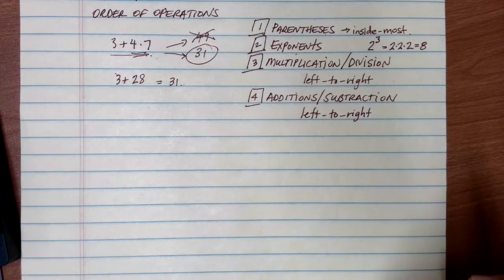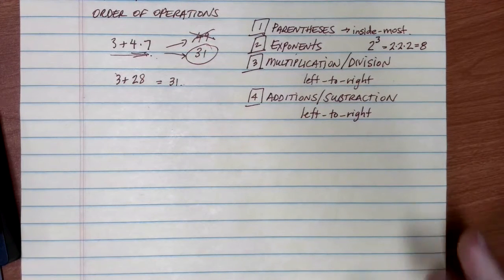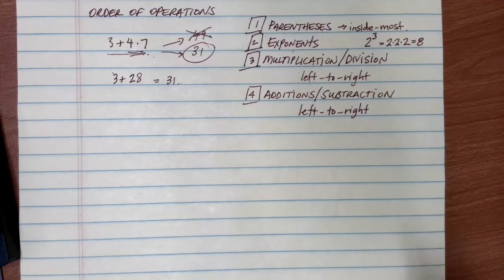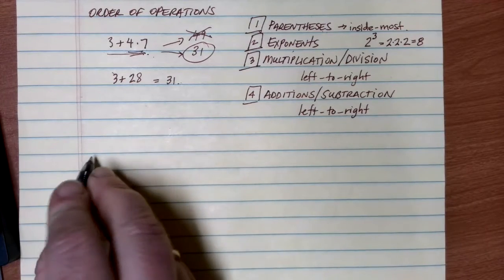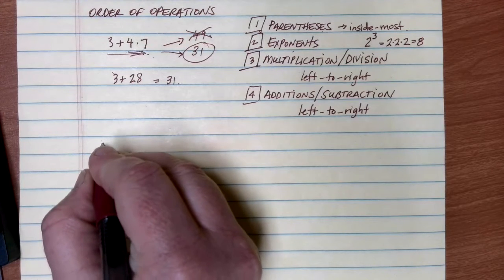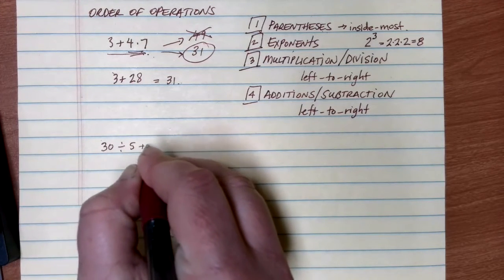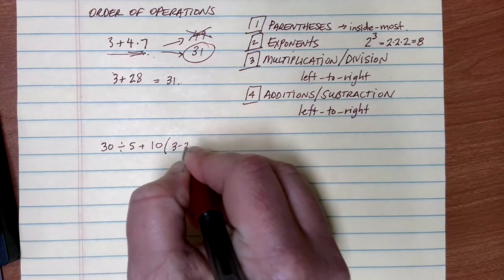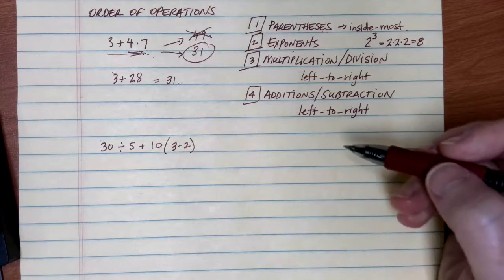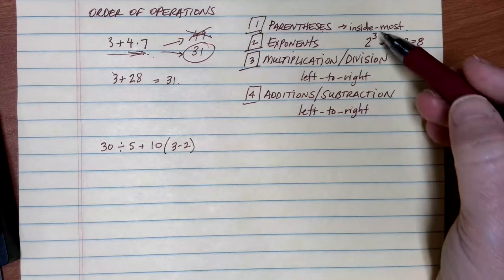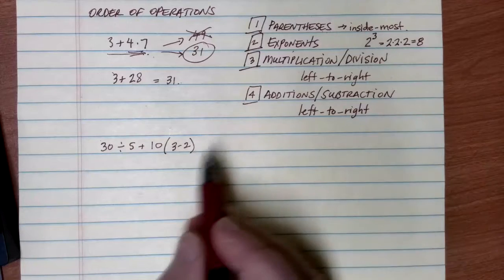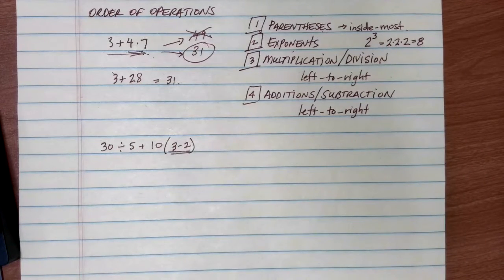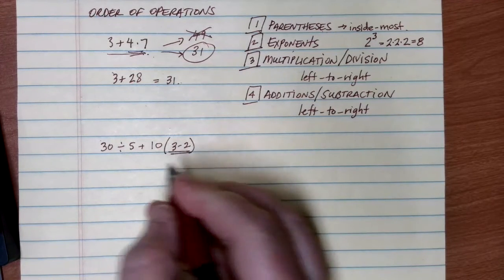That gives us the general approach to simplifying expressions. Let's look at a more complicated expression: 30 divided by 5 plus 10 times 3 minus 2 in parentheses. Going through our order of operations — parentheses, exponents, multiplication/division, addition/subtraction — the first thing we check for is parentheses. We do have a set of parentheses, so those are the very first thing we do. Inside the parentheses, 3 minus 2 equals 1.